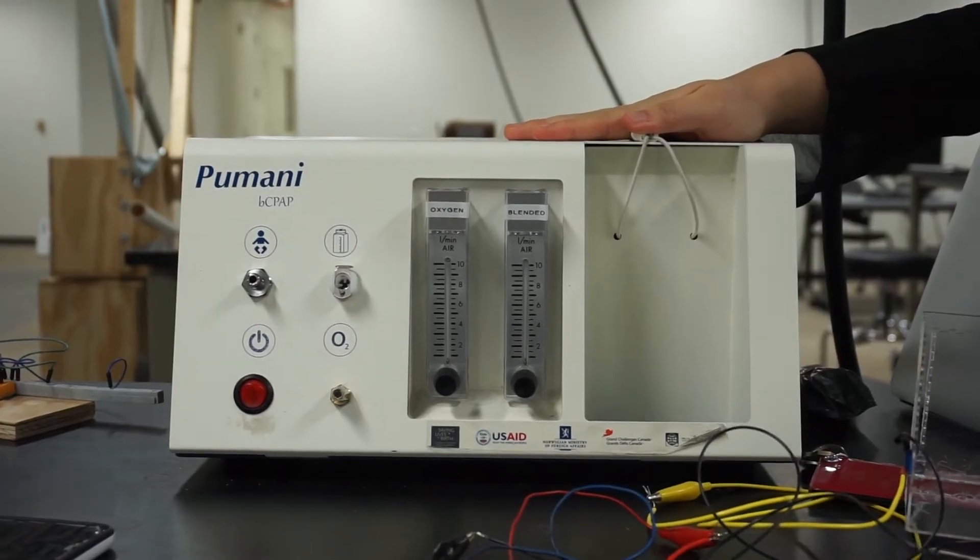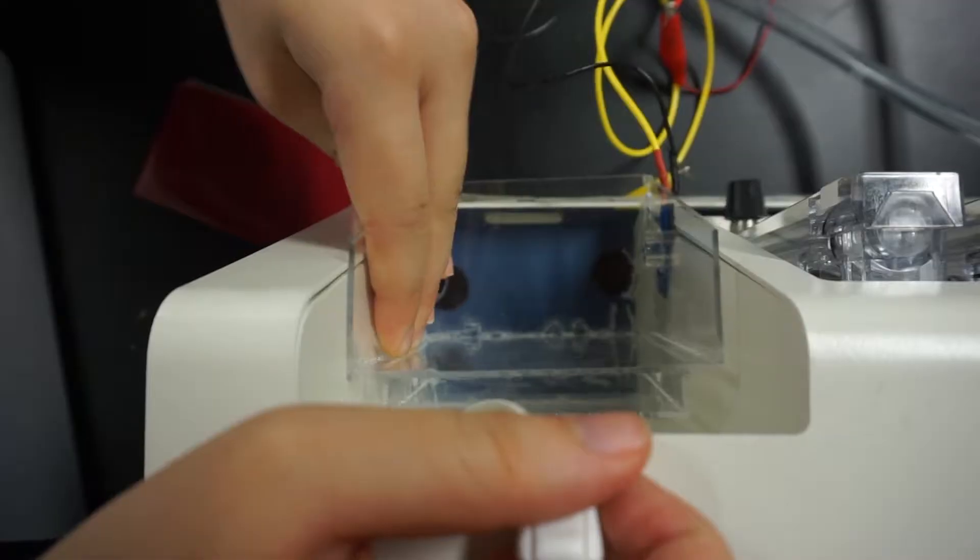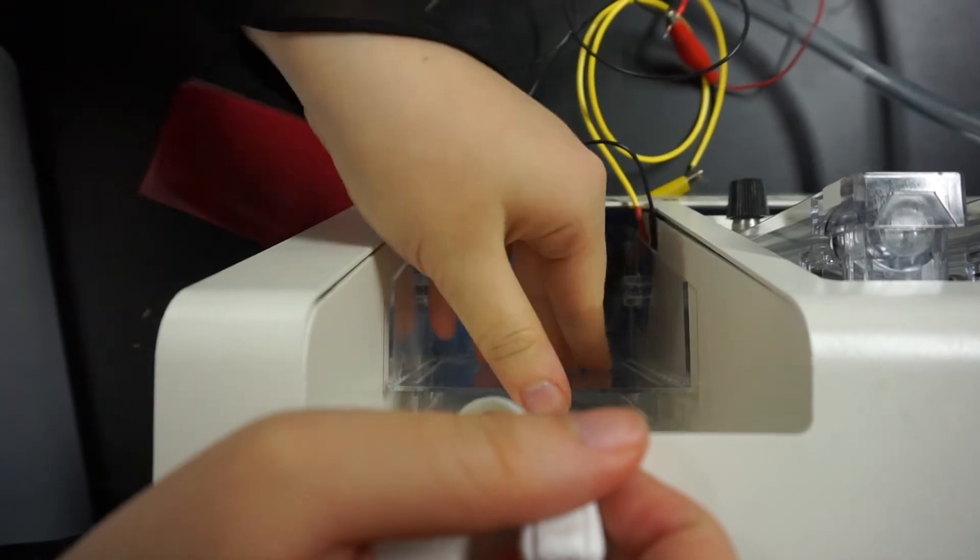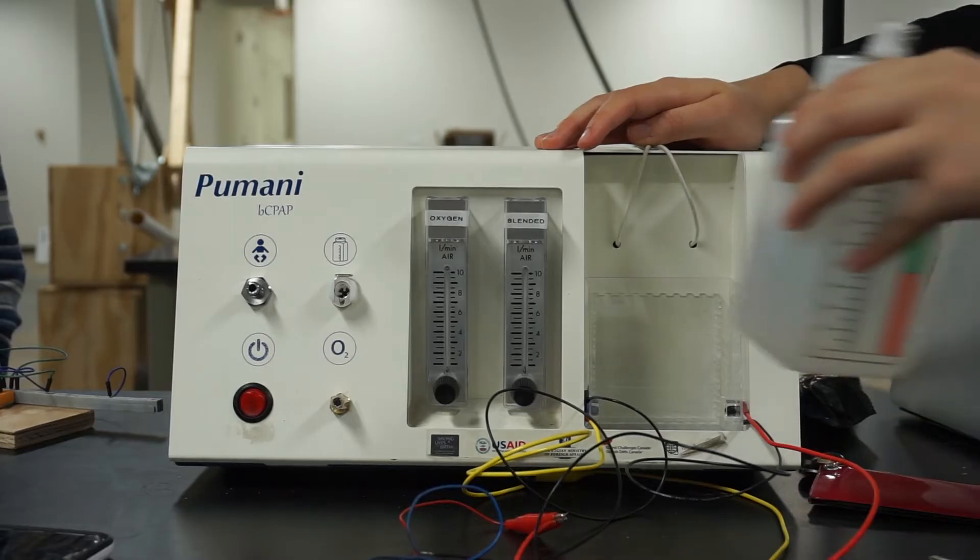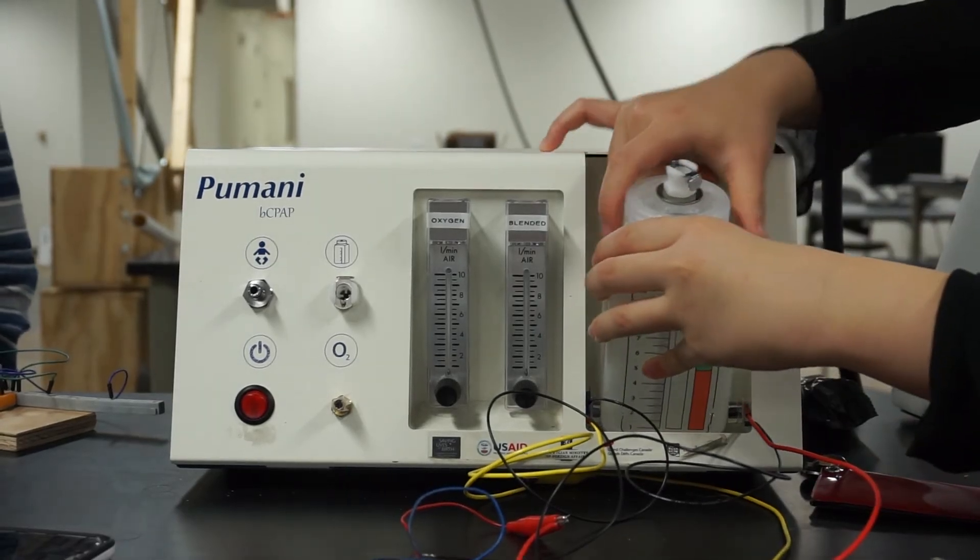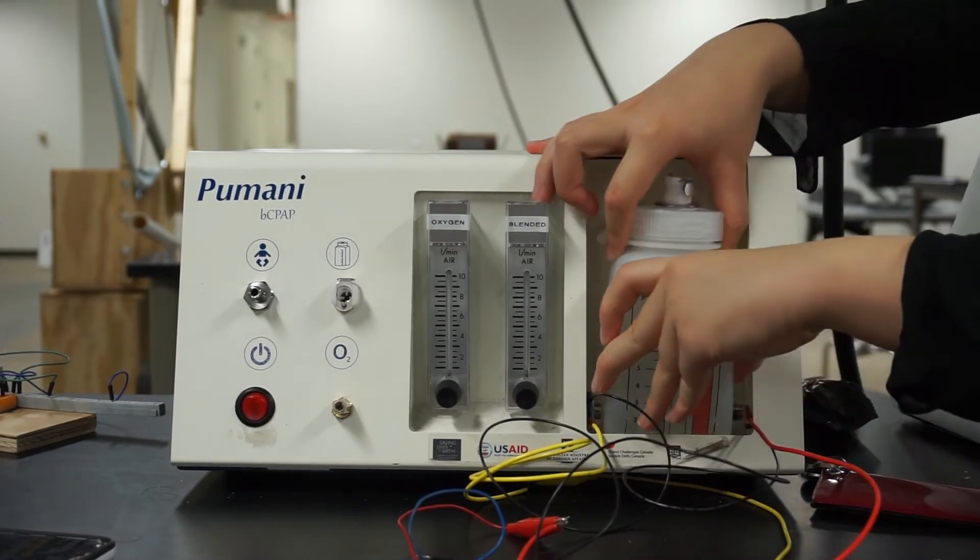The stand holds the LED and photodiode at the right height for optimal signal and fits within the cavity of the existing system, which enables our monitor to be used as an add-on in countries where the Pomani system is already utilized.